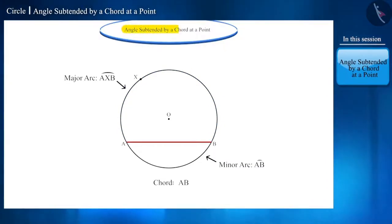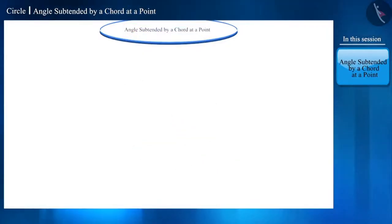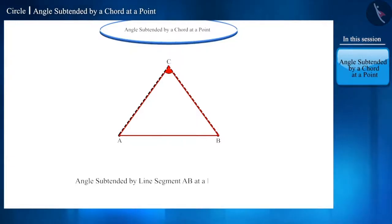What do you understand by an angle subtended by a chord? Let's try to understand this concept. If we draw a line segment AB and take a point C which is not on this line segment AB, and if we join both ends of this line segment with point C, then angle ACB will be called an angle subtended by line segment AB at point C.